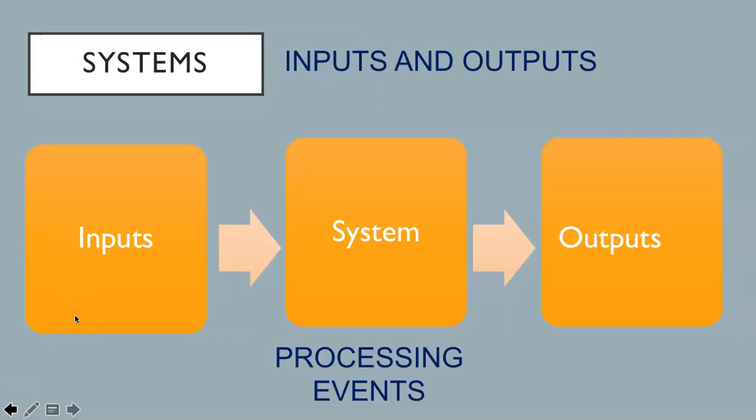In topic 1.1 we discussed the inputs and outputs to an environmental value system. All open systems involve inputs that go into the system and that are processed. The processing events occur inside the system resulting in some outputs. Inputs and outputs are referred to as transfers, while processing events are referred to as transformations.